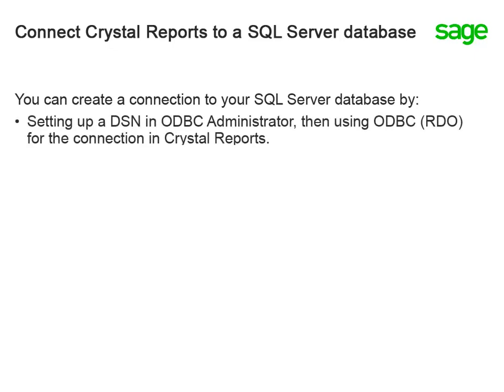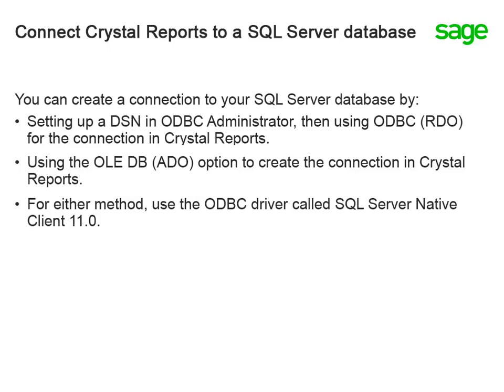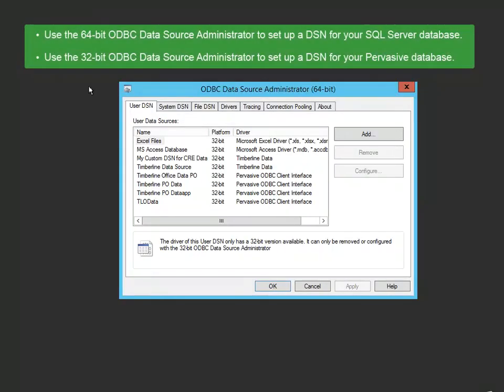First, you can use the ODBC Administrator to create a DSN, then in Crystal use that DSN in ODBC RDO. When you use this method, anyone using that report must also have that DSN set up on their machine. Or, you can connect to the SQL Server database through OLEDB ADO in Crystal. For either method, you should use the ODBC driver called SQL Server Native Client 11.0. To set up a DSN for your SQL Server database, use the 64-bit ODBC Data Source Administrator. The DSN for your Pervasive data continues to be 32-bit ODBC.